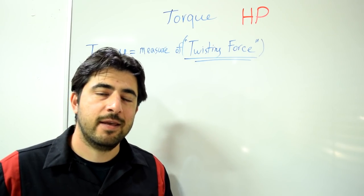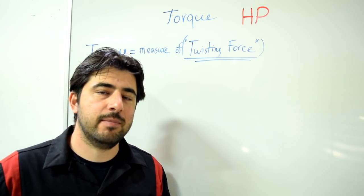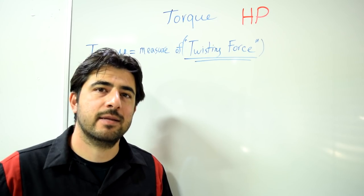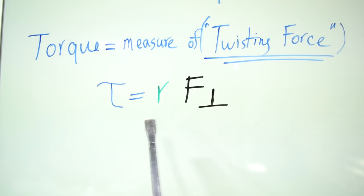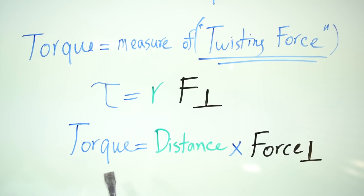Now you might be thinking can twisting force be accurately measured? And oh yeah it can. It's called physics. Now here's a formula for it which basically means torque equals distance times force being applied exactly perpendicular to our pivot point.